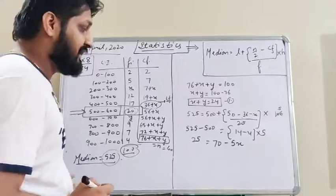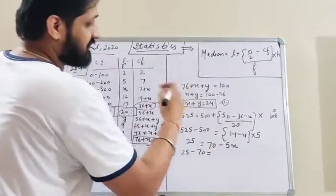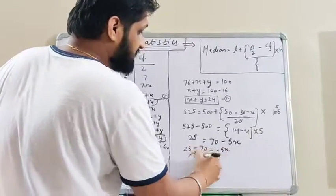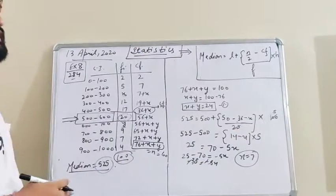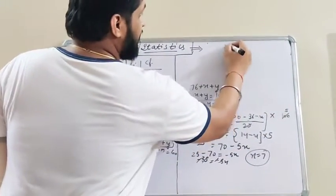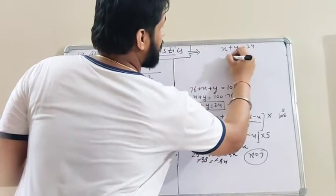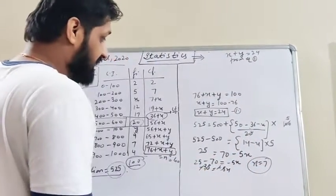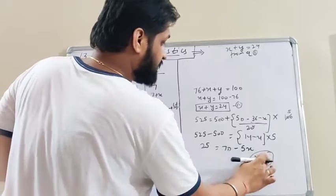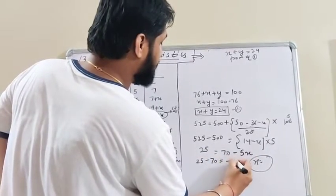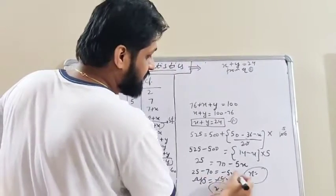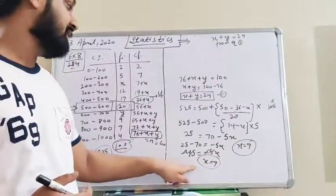Simplifying further: 25 minus 70 equals minus 5x, so minus 45 equals minus 5x. Wait — let me correct that: 25 minus 70 equals minus 45, so minus 45 equals minus 5x, and therefore x equals 9. The value of x is 9, because 70 minus 25 is 45, giving x equals 9.